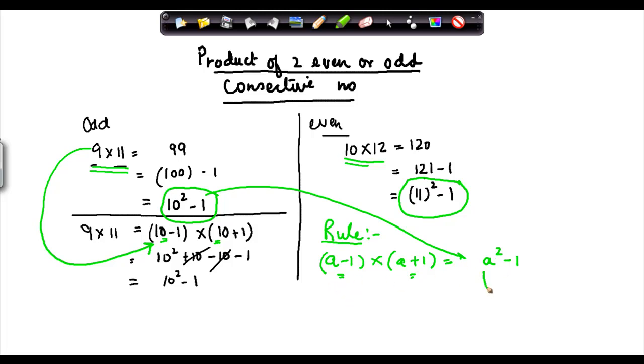So the number that I took here was 10 minus 1 into 10 plus 1 equals 10 square minus 1. Please note that 10 minus 1 and 10 plus 1, the difference between these two numbers is going to be always two in order to make them consecutive even or consecutive odd numbers. So the product of two even or two odd numbers can also be written as a square minus 1, where a normally is equal to those two numbers, x plus y divided by 2. In two consecutive numbers if you take their sum and divide them by two you will get the value of a.